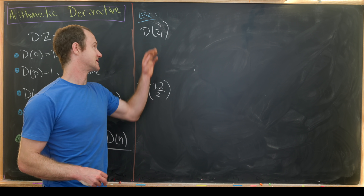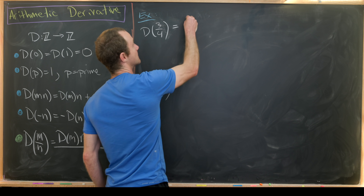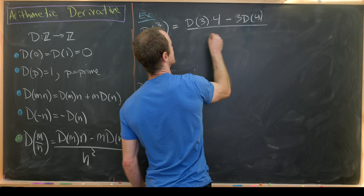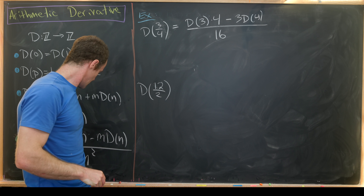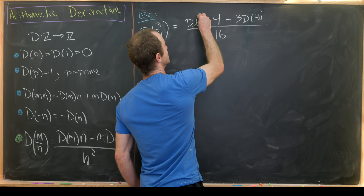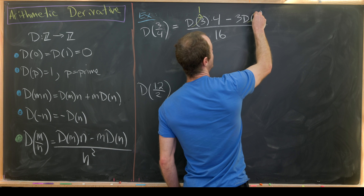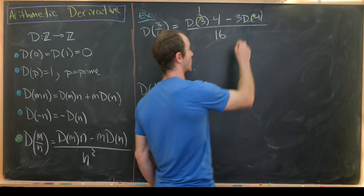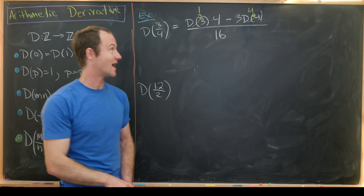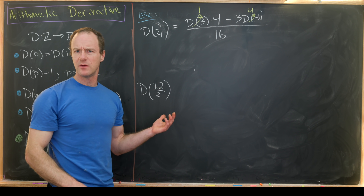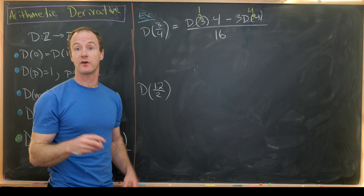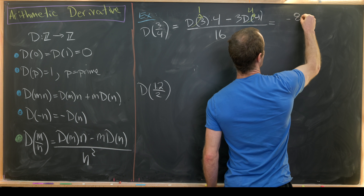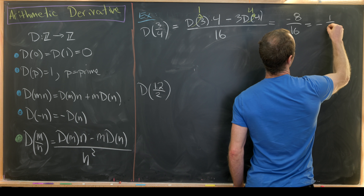Let's do d(3/4). That's (d(3)·4 − 3·d(4)) over 16. Since 3 is prime, d(3) equals 1. Since 4 equals 2², d(4) equals 2·2¹ equals 4, so 4 is actually a fixed point of the arithmetic derivative. That leaves us with 4 minus 12, or negative 8 over 16, which equals negative one-half.